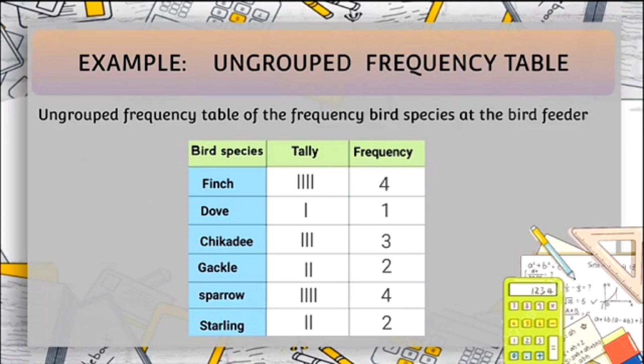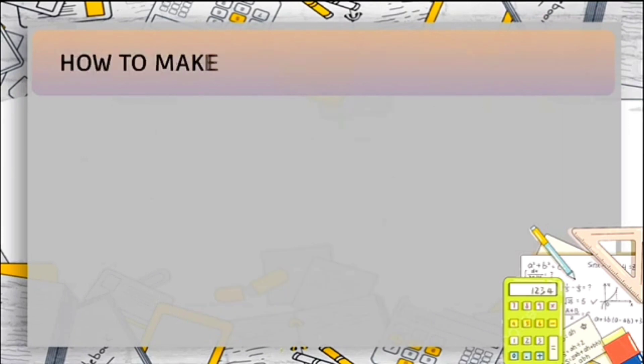For finch, it has a tally of 4, so the frequency is 4. For dab, 1. Chickadee, 3. Grackle, 2. Sparrow, 4. And starling, 2.